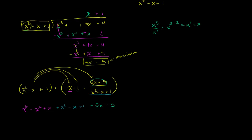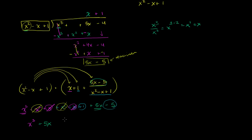Now let's simplify. We only have one third degree term: x to the third. For the second degree terms, we have negative x squared and positive x squared — they cancel out. For the first degree terms, we have positive x and negative x — those cancel out too. So we're just going to have that 5x: plus 5x. And for the constant terms, we have positive 1 and negative 5 — add them together, you get negative 4. So you get x to the third plus 5x minus 4, which is exactly what we had originally.